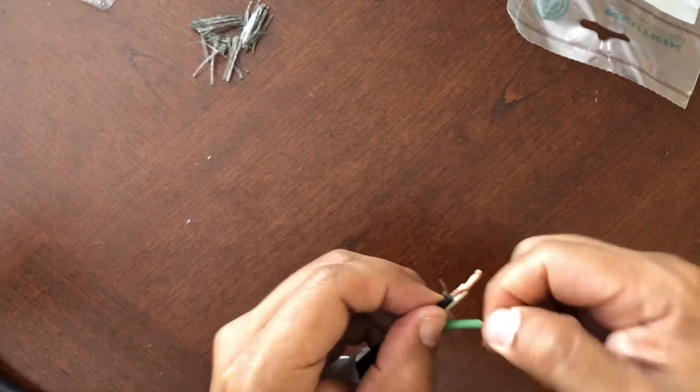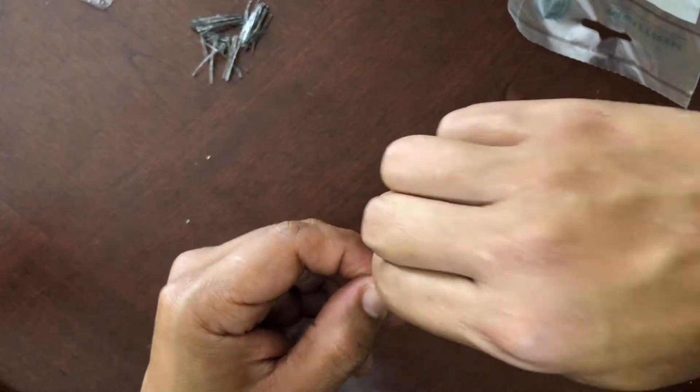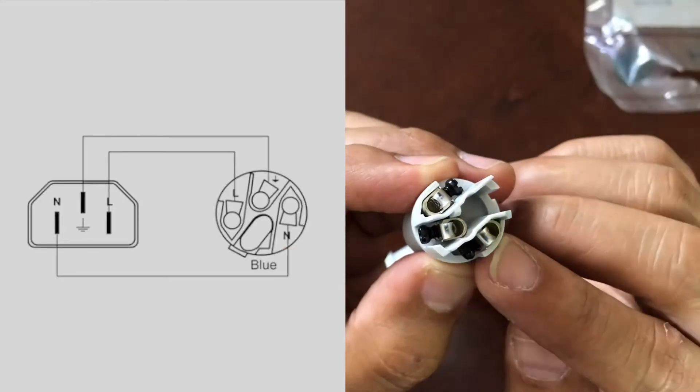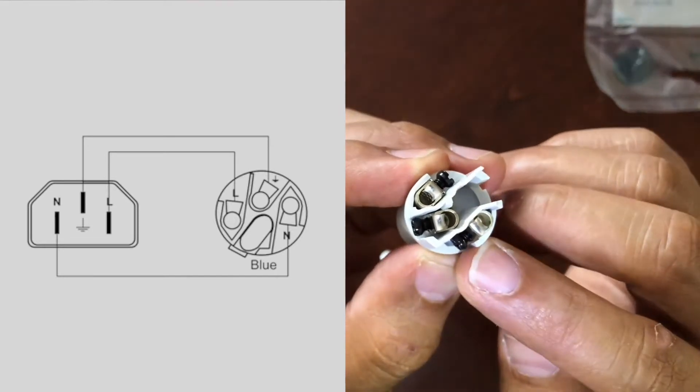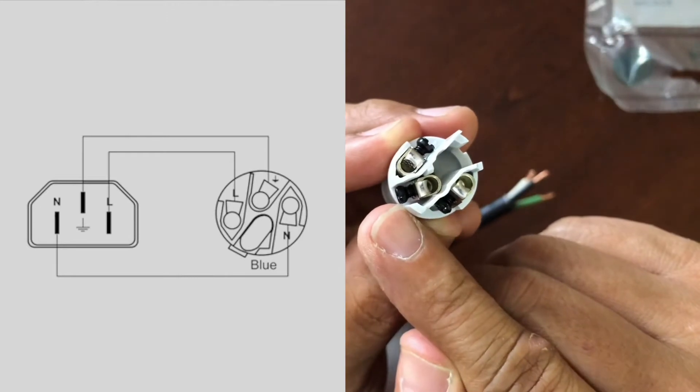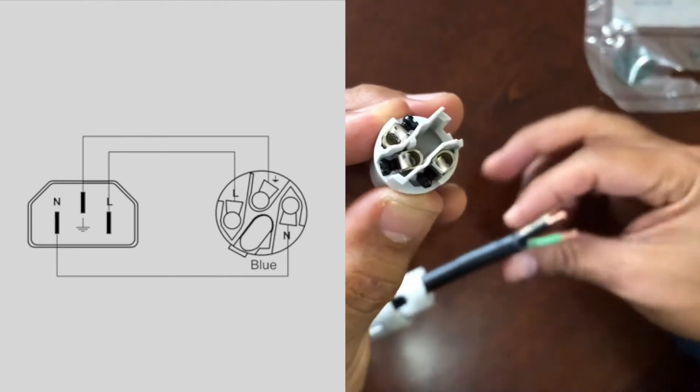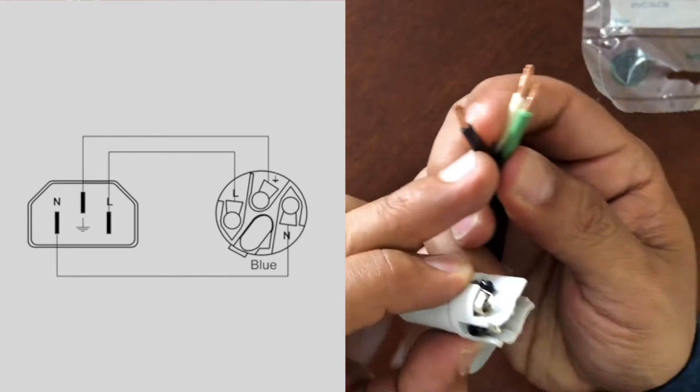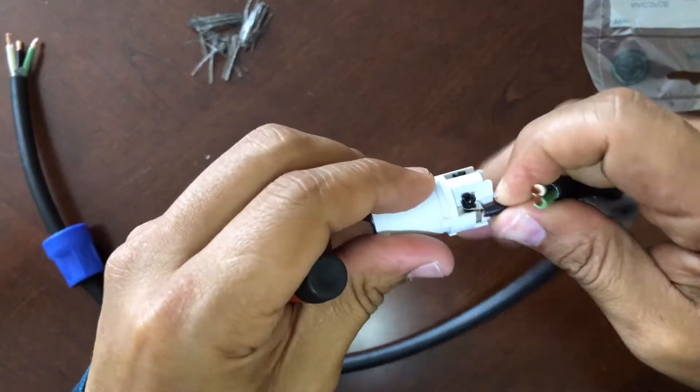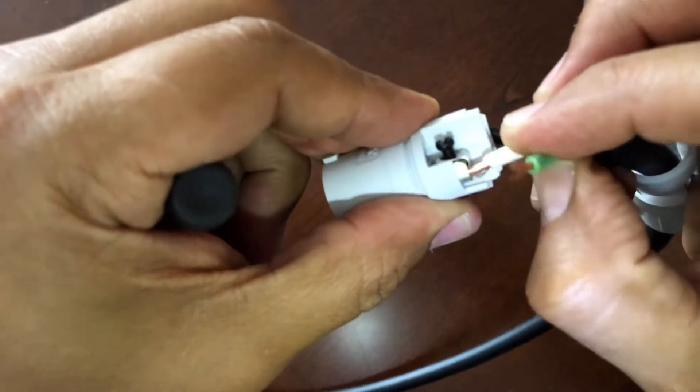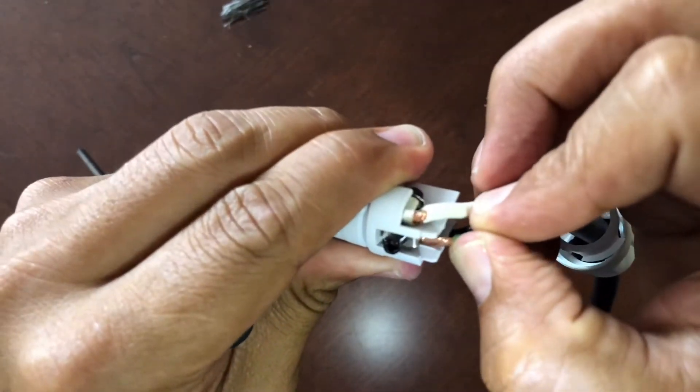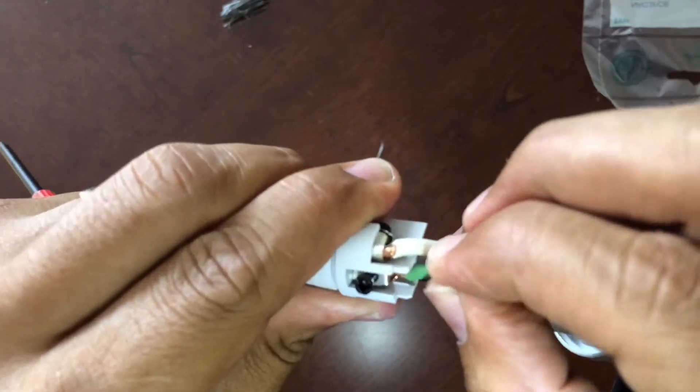Now we're ready to make the connections. The connector has three prompts: one labeled L for load, another N for neutral, and the third is ground. Connect the black cable to the load connector, the white one to the neutral connector, and the green one to the ground connector. Once you have these connections made,